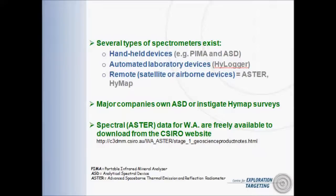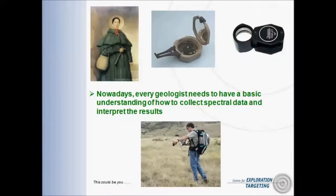There are several different types of spectrometers we can use. Handheld devices such as the PIMA or the ASD; in the laboratory we use the HyLogger, which is a larger set of equipment for scanning drill core; and then we can use it in a remote sense, on board a satellite or an aeroplane flying over the Earth's surface and collecting data. Major companies generally have access to handheld devices either through owning them or using a laboratory. An important development is that ASD data is freely available from the CSIRO website covering all of Western Australia, so it's more likely that most of us will get a chance to use it in the field.